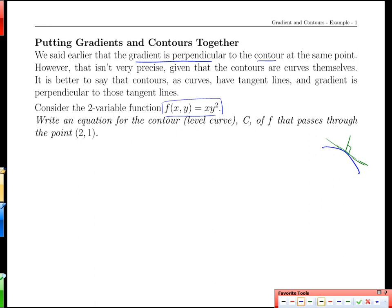We're looking for a contour that passes through the point (2,1). So we go to (2,1). There's going to be some contour that goes through that. What contour is it? Well, it's a contour that's going to have the same height as the function at (2,1). F is 2 times 1 squared, or 2.